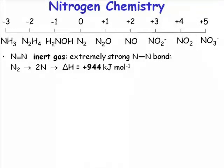And we'll see we get essentially everything in between. The obvious place to start when you're surveying an element is with the element in its elemental form. And there is only one allotrope of nitrogen, the N2 triply bonded molecule.